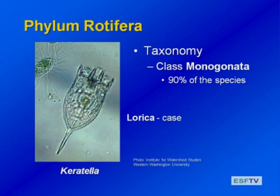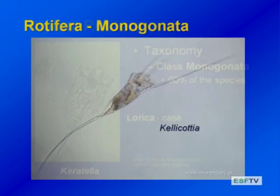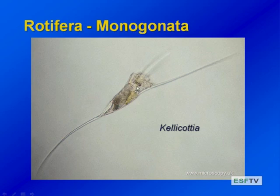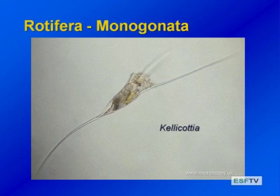The other group, the class Monogonata, comprises about 90% of rotifer species. Some may live in a hard case called a lorica — here is a lorica for this Keratella, and the little rotifer with its corona is inside the hard case, protected from predators. Here's one that might be even more protective — the Colacalyx with really long spines that make it effectively a much larger prey item. In aquatic systems, things are generally only eaten by things bigger than them, so these giant spine projections make it really hard to consume.